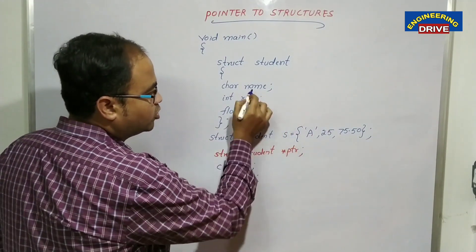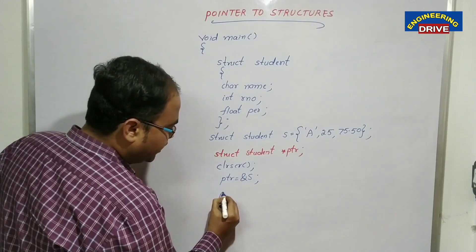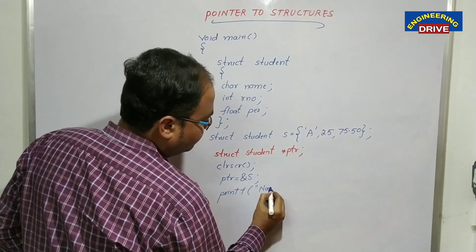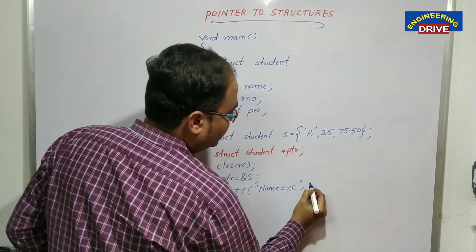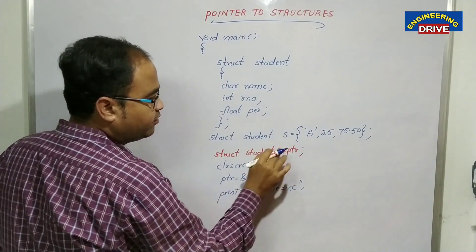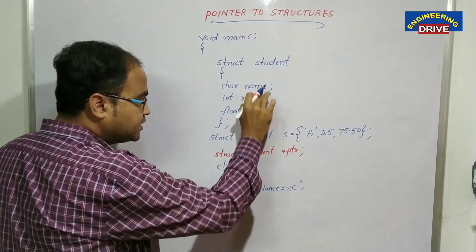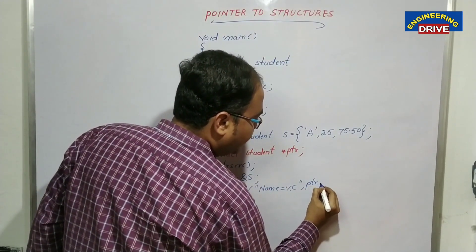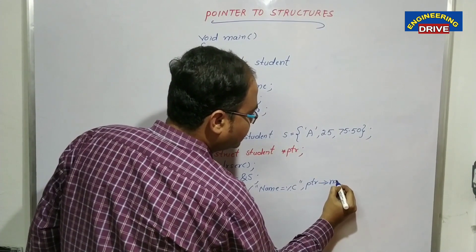Now I want to display the values of the three elements not directly — directly would be s.rollnumber, s.name, s.percentage using the dot operator — but I want to display those values through the pointer. So I write: printf("Name = %c", ptr->name). I use the arrow operator to access elements of the structure through the pointer variable ptr.